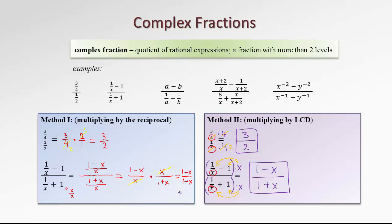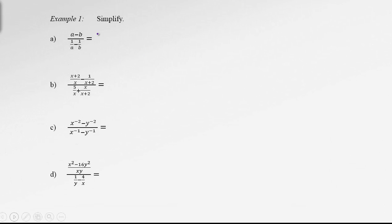The best idea is to know both methods and use the one that seems to work easier for a particular question. Here are the problems from the first slide. Let's simplify them using any method we wish. For the first example, I'm going to use Method 1 — converting division into multiplication by the reciprocal. The first thing to do is perform this subtraction to create a single fraction in the denominator.